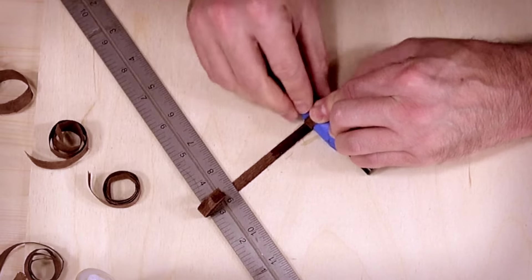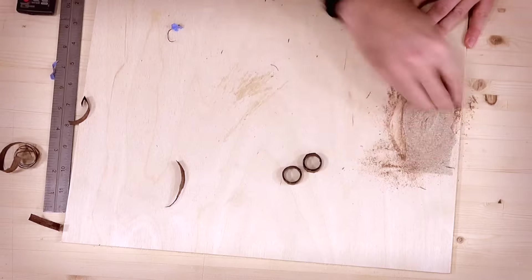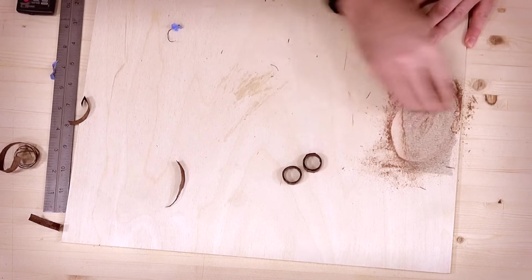For this style of ring, you'll need to repeat the process two more times. Now you'll want to sand the outside edges flat.